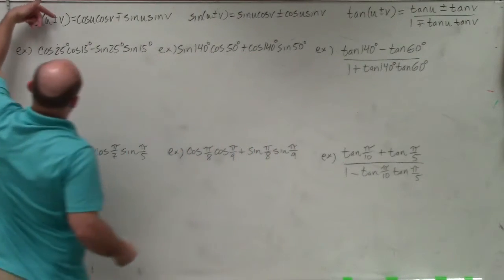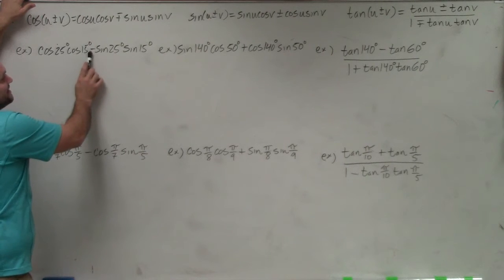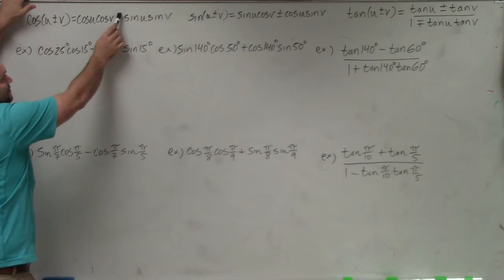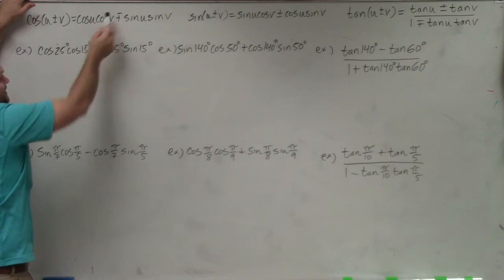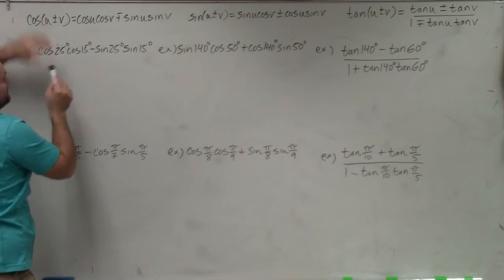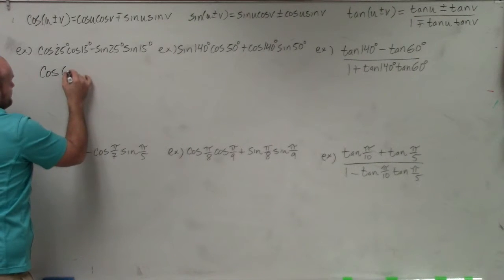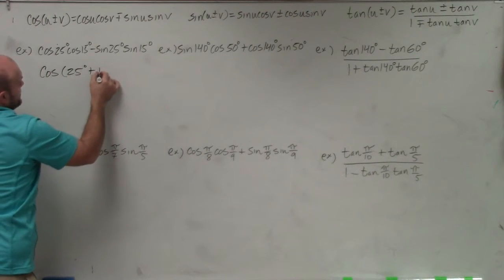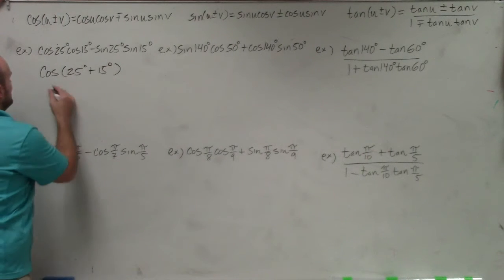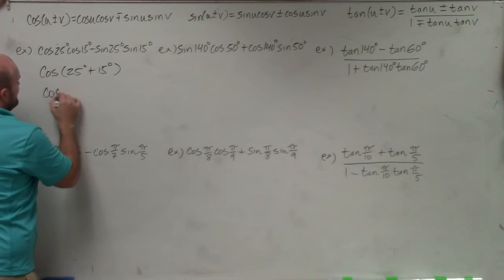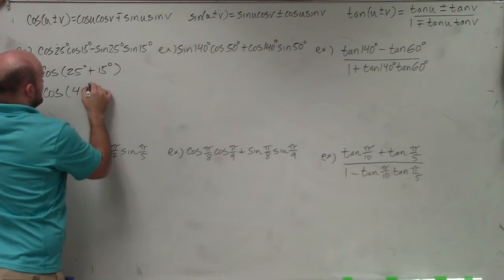Now we need to determine whether we're adding or subtracting the two angles. Since it's the difference of these two expressions, that means we're adding the two angles. Our two angles, u and v, are 25 and 15 degrees. So I can rewrite this as cosine of 25 degrees plus 15 degrees. Since we're dealing with degrees, that's easy to add — my final answer is cosine of 40 degrees.